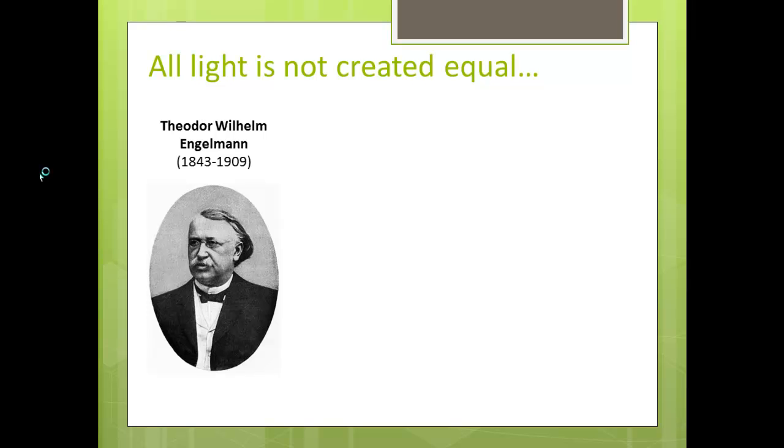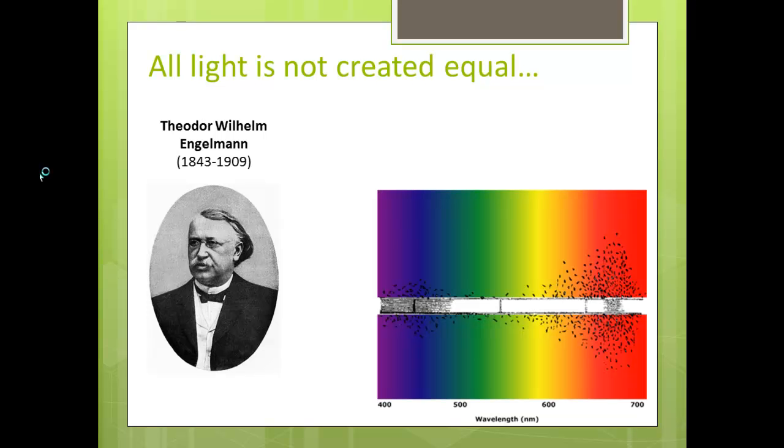Engelmann tried to figure out what colors of light plants are absorbing, what colors are most important to plants. He had a really cool experiment. In this picture, that little white line is actually cells of very thin photosynthetic algae that does photosynthesis. Those little black dots are bacteria that like oxygen. Wherever the bacteria go, that's where there's the most oxygen.